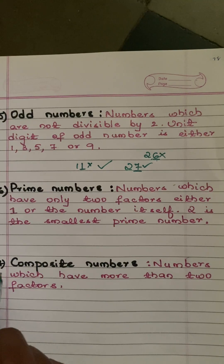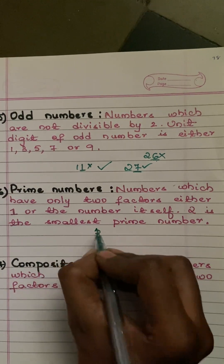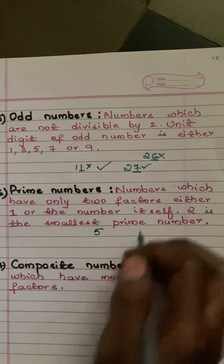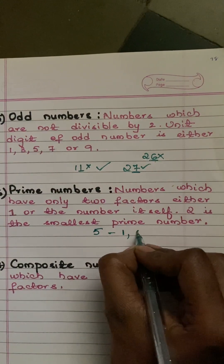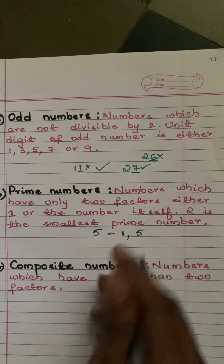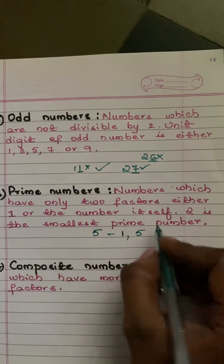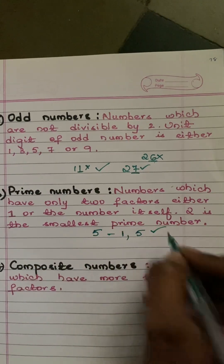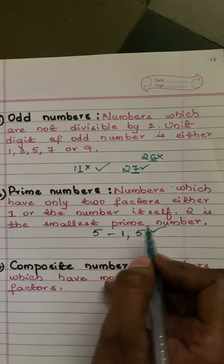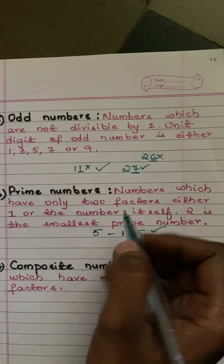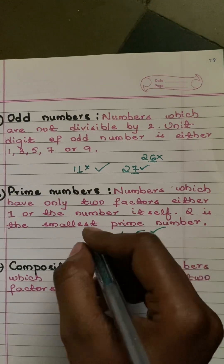What are prime numbers? Numbers which have only two factors — one or the number itself — are prime numbers. For example, five goes in the one times table and the five times table but no other, so five is a prime number. Two is the smallest prime number, and prime numbers go: two, three, five, seven, and so on.